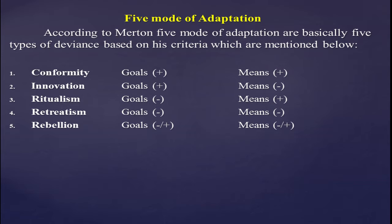The 'goal' here refers to wealth, high status, education, and fame — the cultural goals or American dreams. The 'means' refers to the legitimate or legal way to achieve these goals. In conformity, both goal and means are positive — conforming citizens accept the societal goals and strive to achieve them.